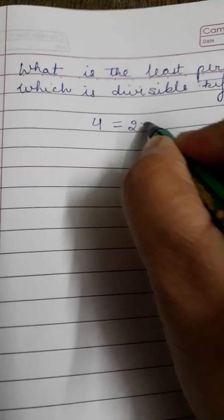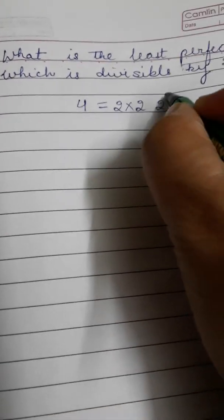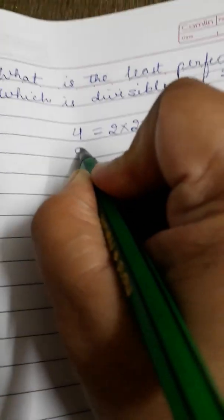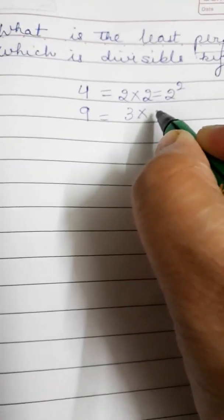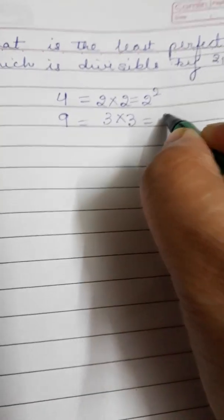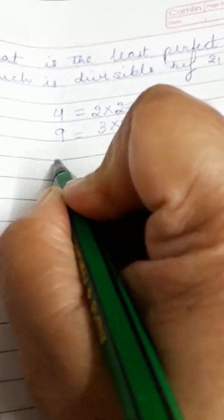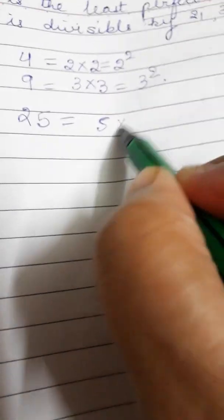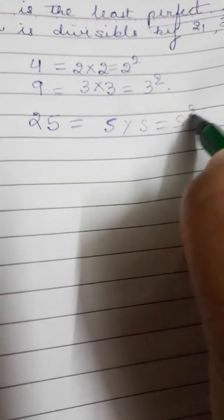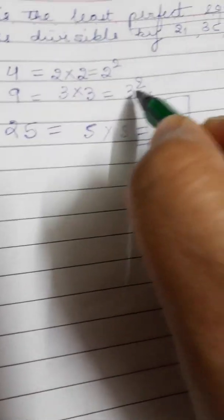4 is a perfect square because I can write it as 2 into 2, that is 2². 9 is a perfect square because I can write it as 3 into 3, that is 3². 25 is a perfect square which I can write as 5 into 5, that is 5².